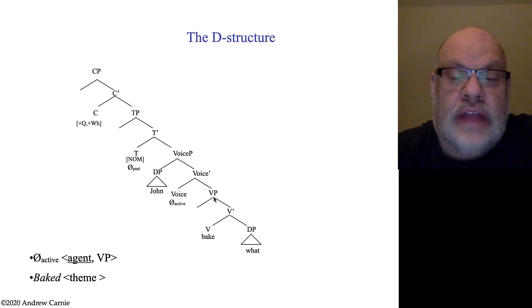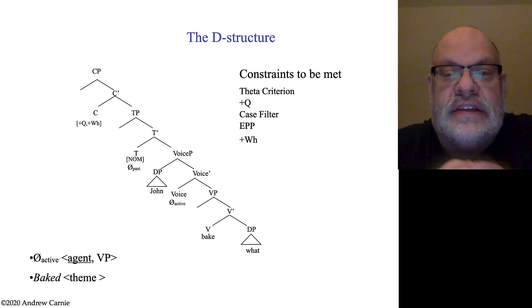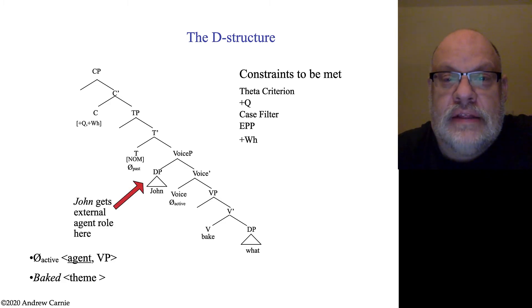The verb bake, which heads the VP, takes a DP complement, which is a theme. So, we have a list of constraints we have to meet. The first constraint we have to meet, and it's the constraint that holds on D structures, is the Theta criterion. And the Theta criterion says that every Theta role must be assigned, and every DP must get a Theta role. This seems to be met in this structure. John here is getting a Theta role from the active voice phrase, and that's the agent role. And what is getting a theme role. All the Theta roles have been assigned, so we've met the Theta criterion.